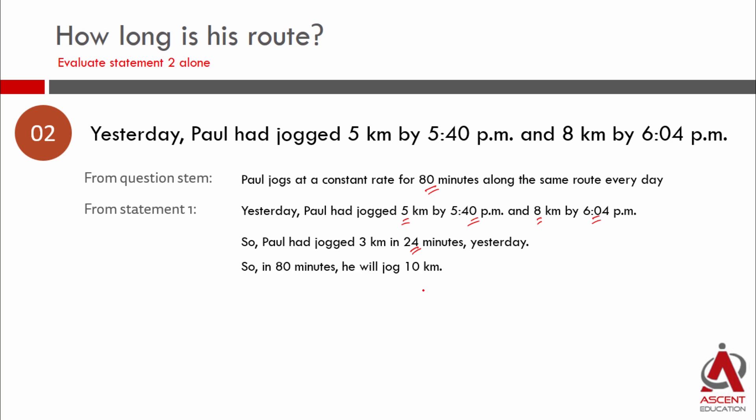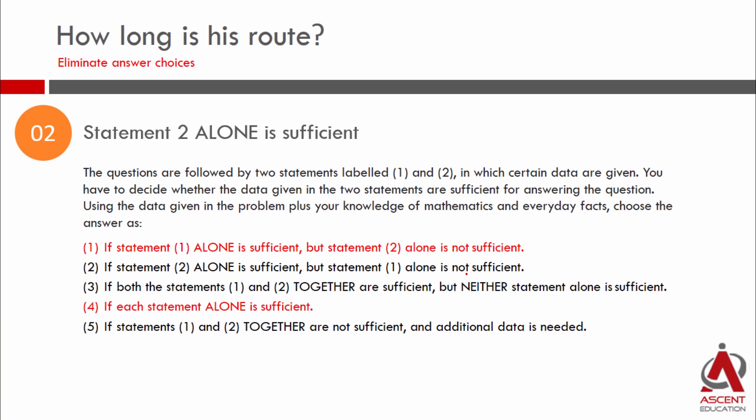And we know every day he jogs 80 minutes. If in 24 minutes he covered 3 km, then in 80 minutes he covered 10 km. We don't need to actually calculate it here. We just need to know whether we can find the answer. Because in data sufficiency, we don't need to know what the answer is, just whether we can find it. So we can find a unique value from statement 2. Statement 2 alone is sufficient. Choice 2 is the correct answer.